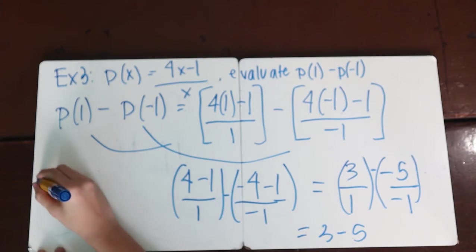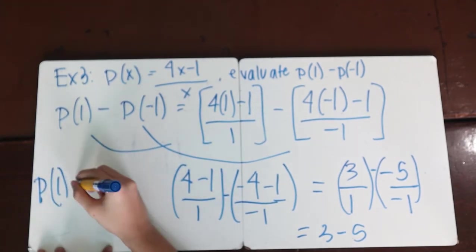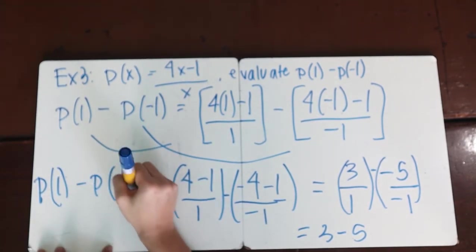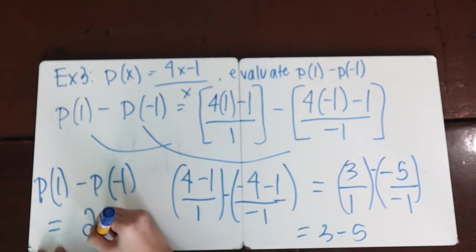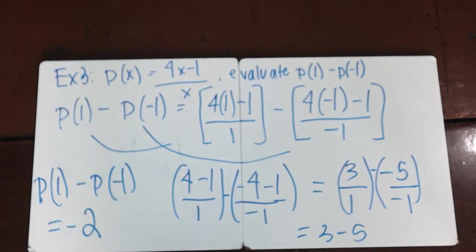That would equal 3 minus 5. Our final answer would be p(1) - p(-1) equals negative 2. That's it. It's easy.